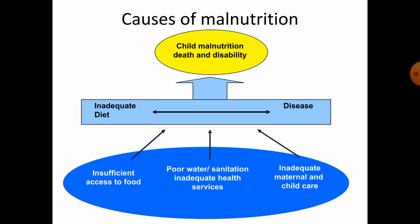The causes of malnutrition include insufficient access to food due to poverty, poor sanitization or poor health services, and inadequate maternal and child care. All of these can lead to inadequate diet and diseases, finally leading to child malnutrition, death, and disability.